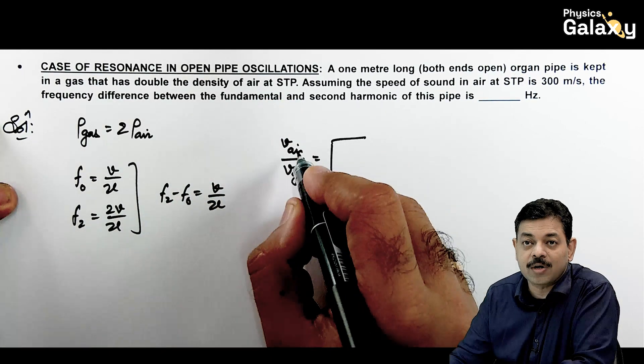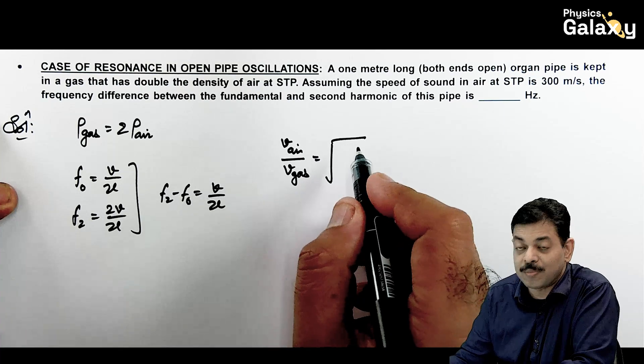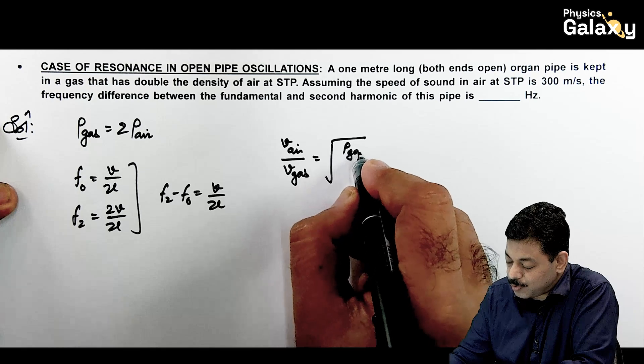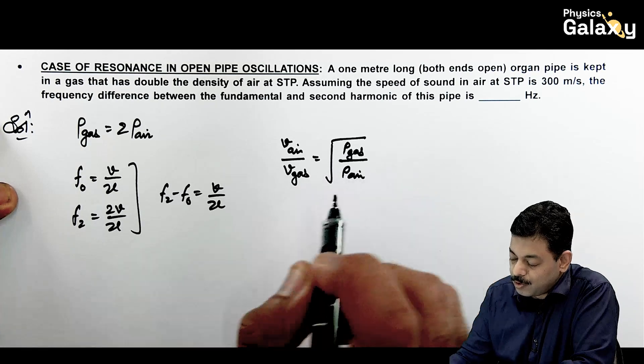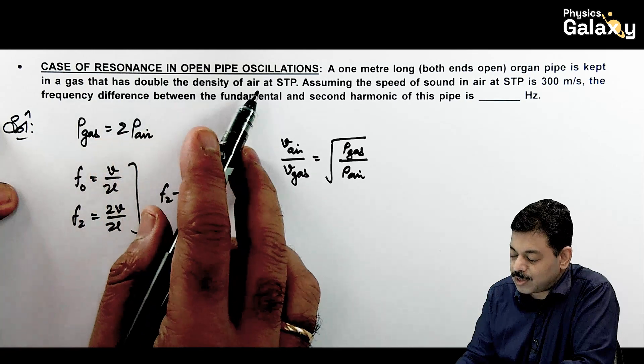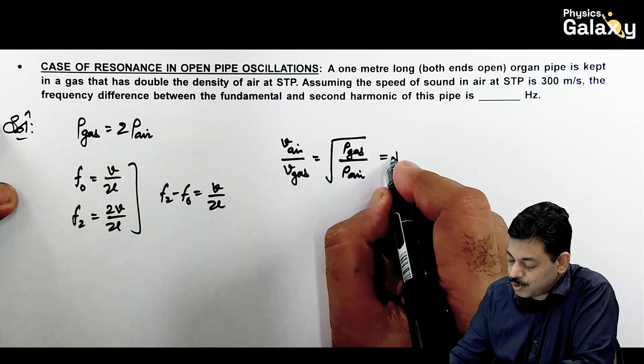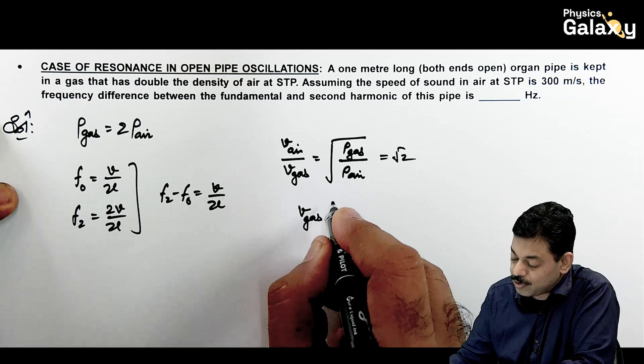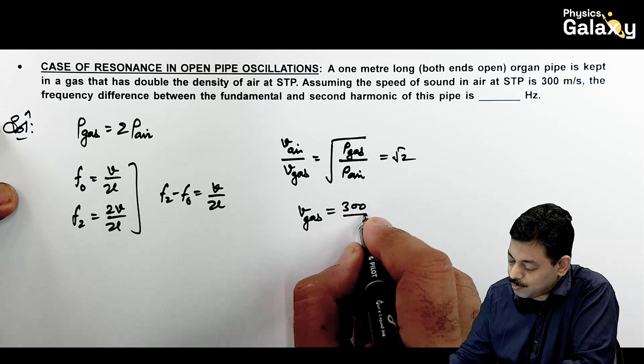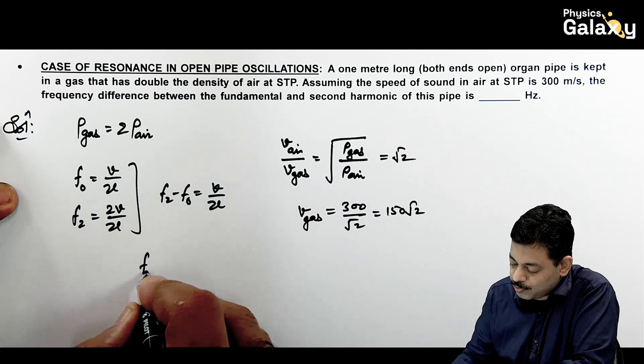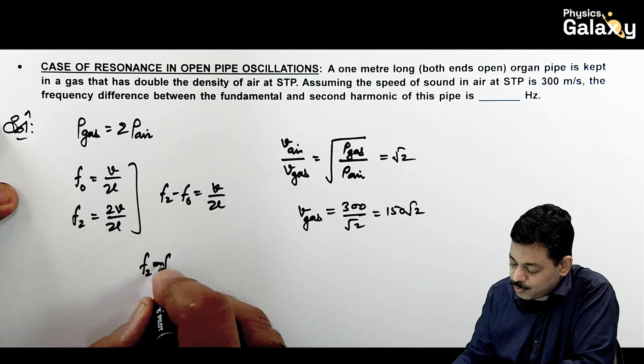So in that case this is equal to root of gamma RT by M. So in that case agar pressure term mein likhen toh gamma P by rho. So this is rho of gas upon rho of air. Aur yahan pe diya hua hai. In this open pipe gas that has double the density of air. Toh this comes out to be root 2. That means velocity of gas jo humko dikhna hai, velocity of sound in gas is given as 300 by root 2 or it is 150 root 2.